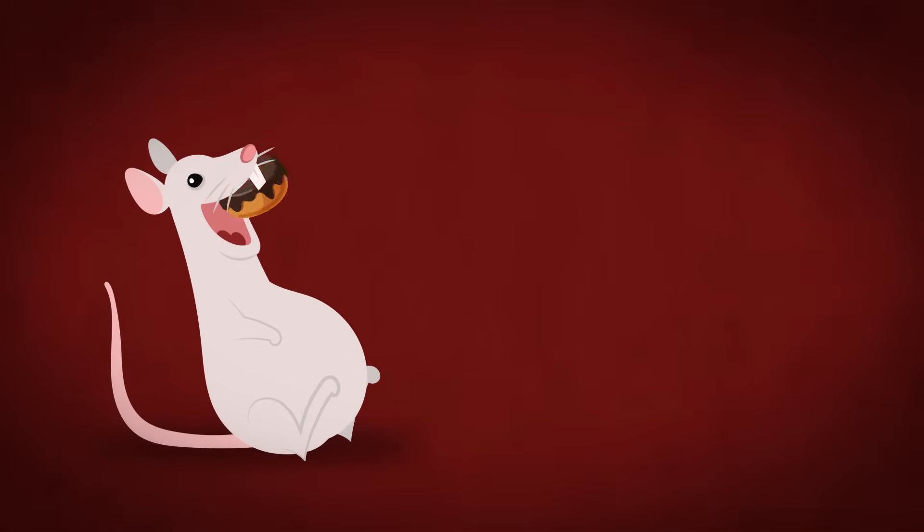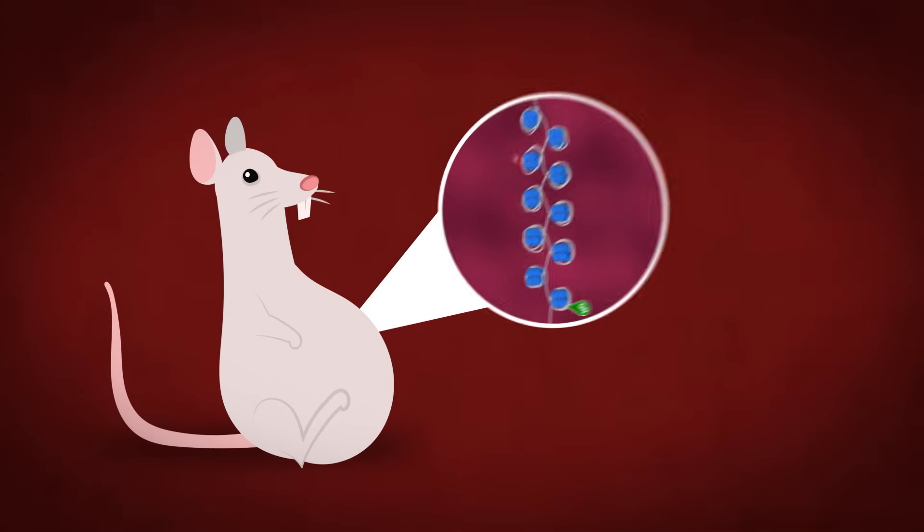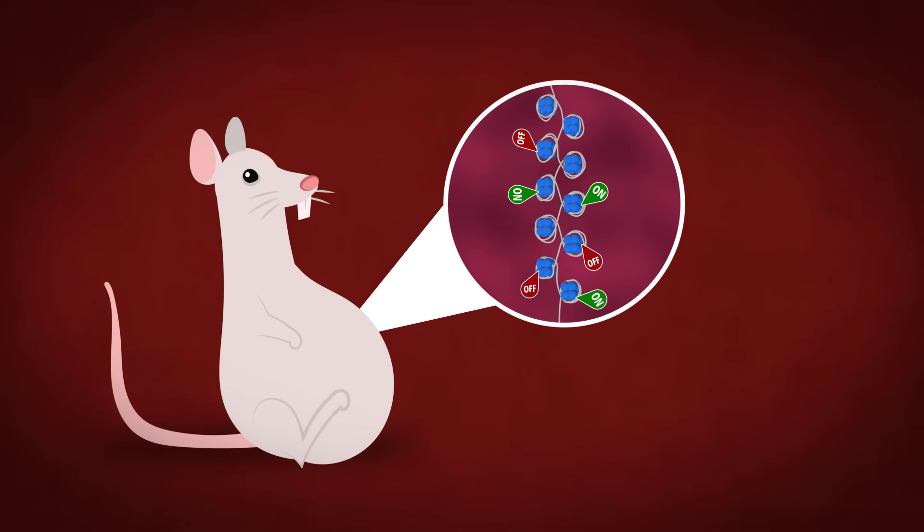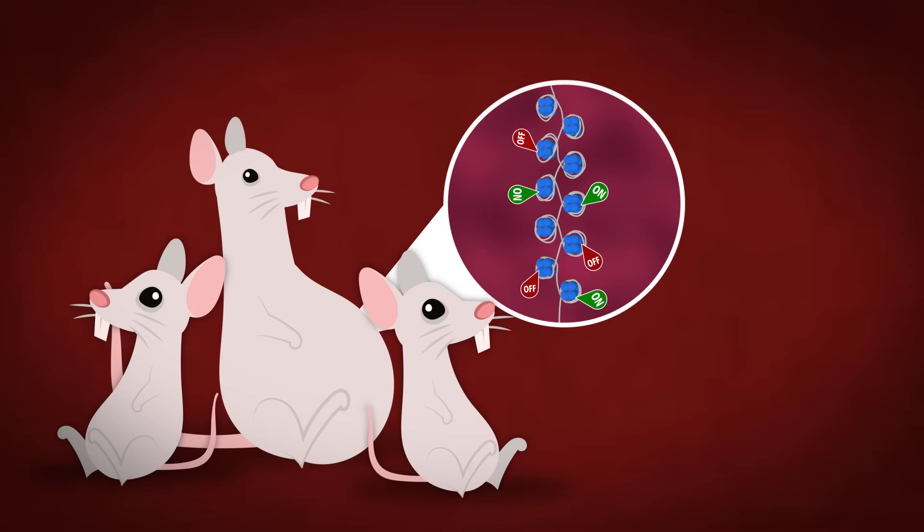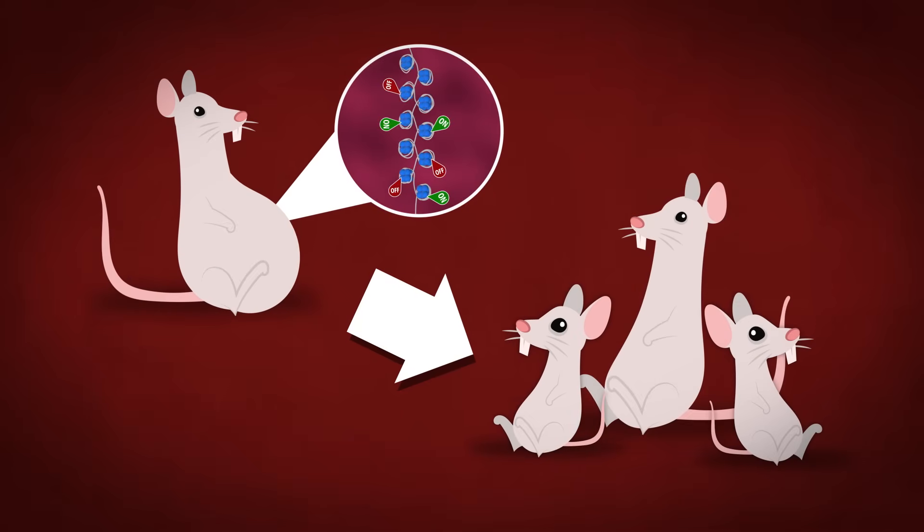Mice fed high-fat diets get fat, unsurprisingly, thanks to changes in the chemical flags on their DNA. But female children of these obese mice, even though they were taken away and raised by normal-sized mothers, still ended up 20% fatter than mice from skinny parents.